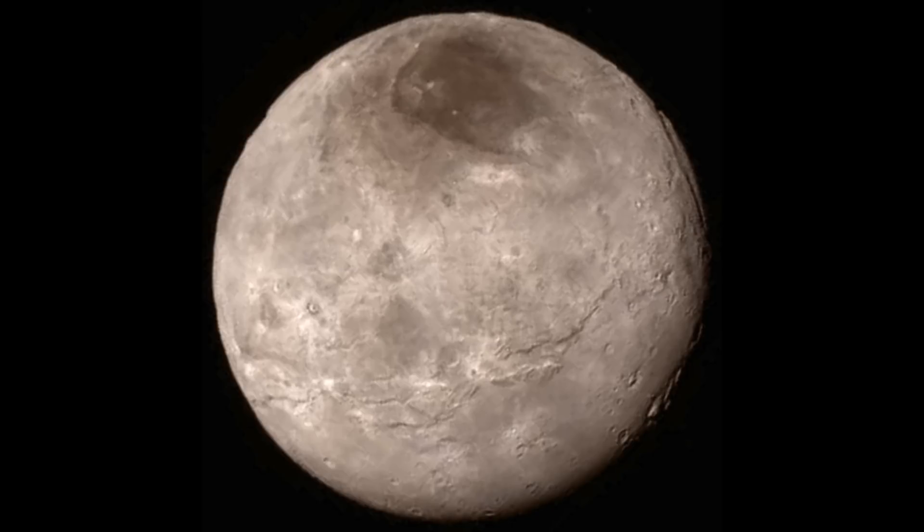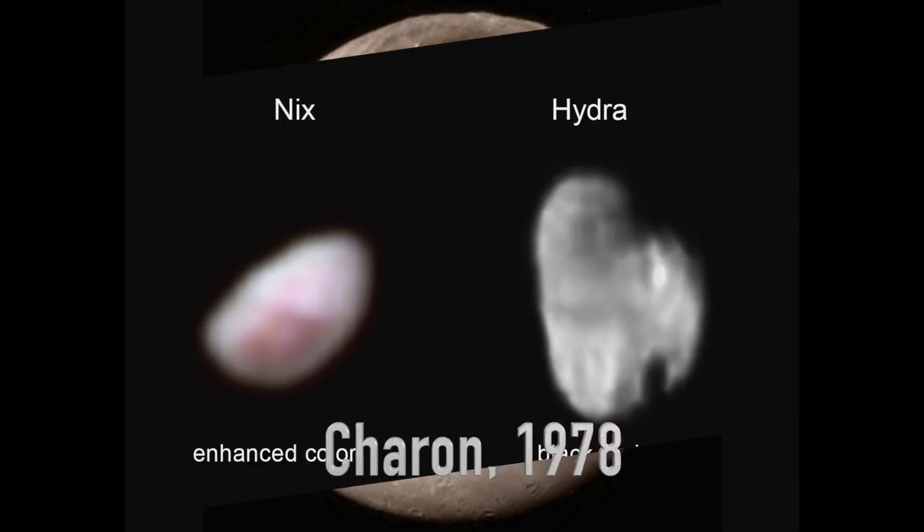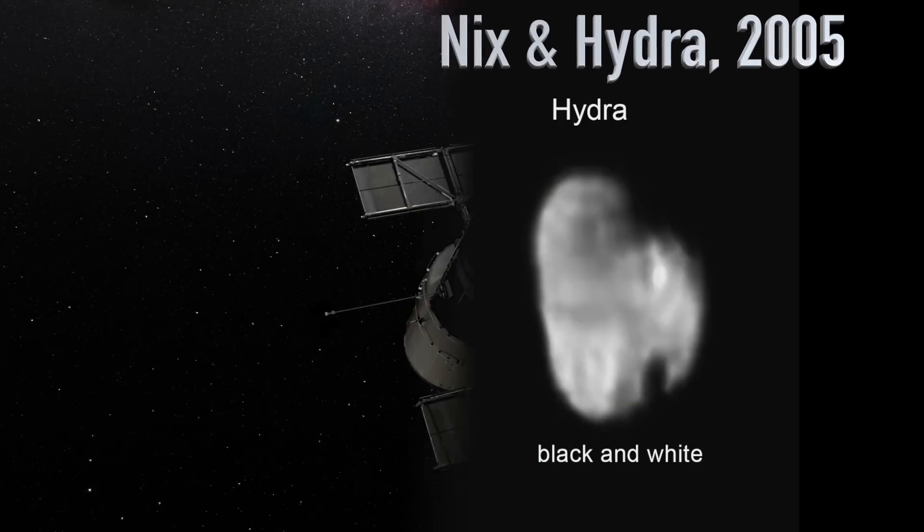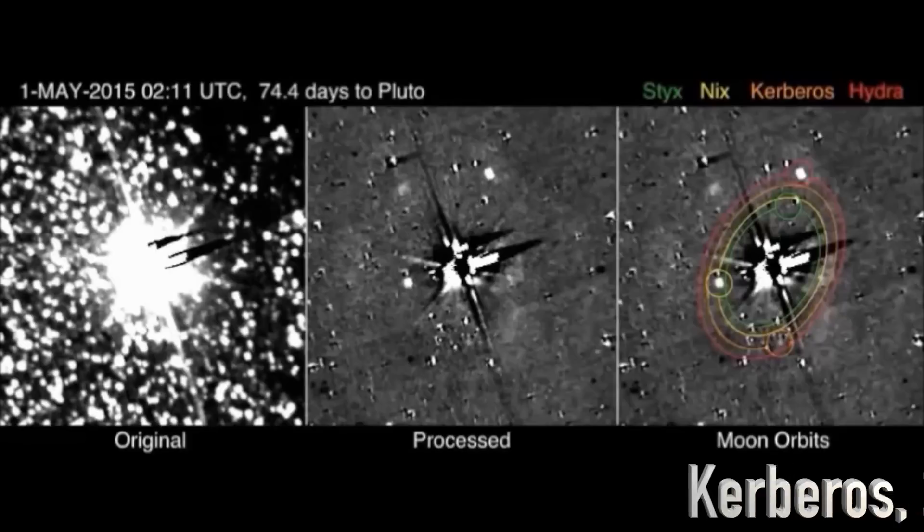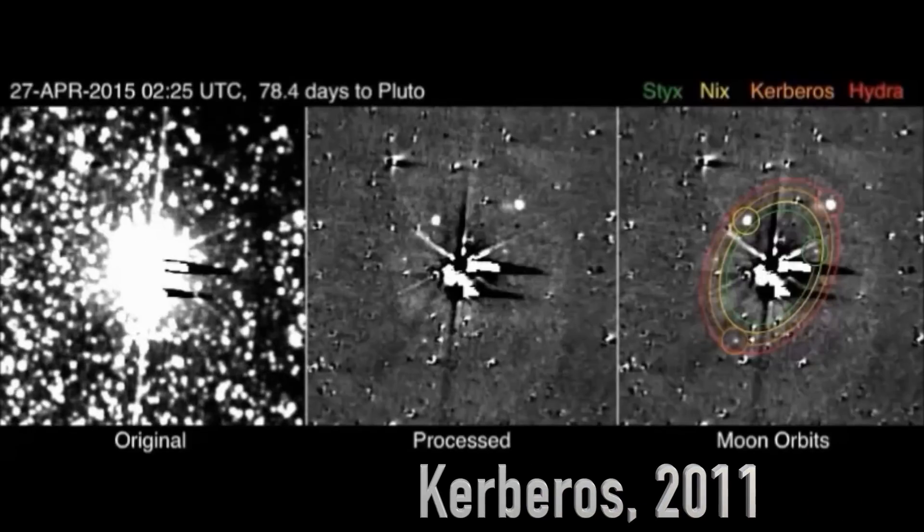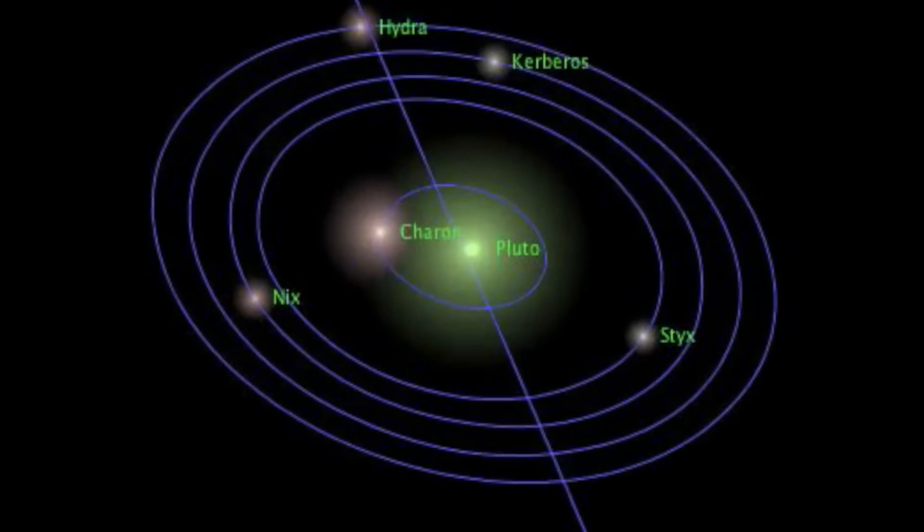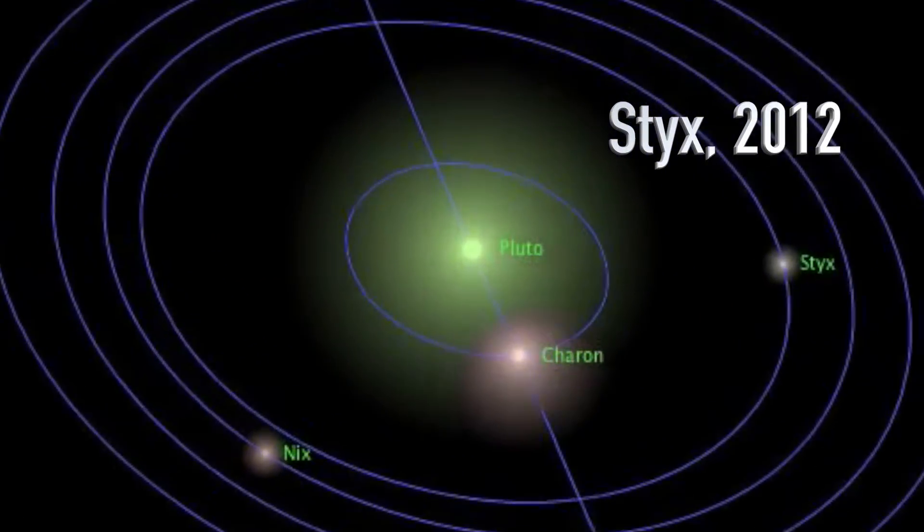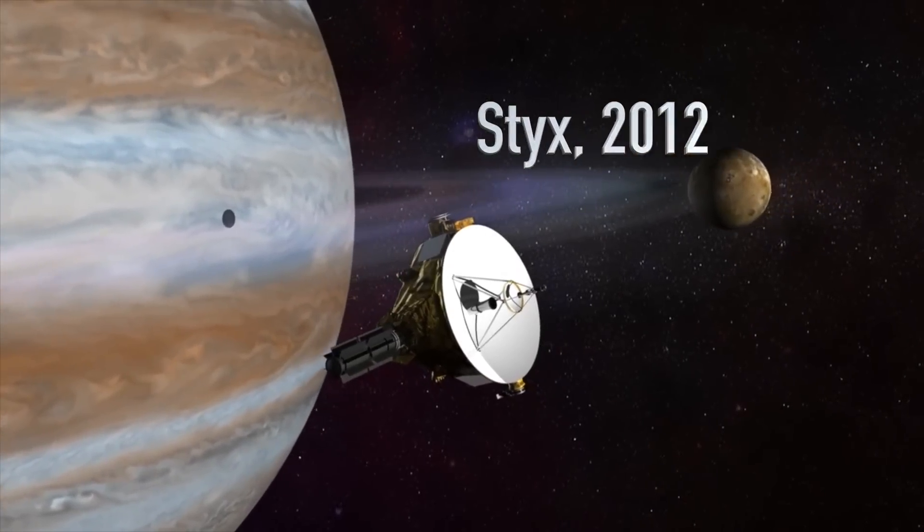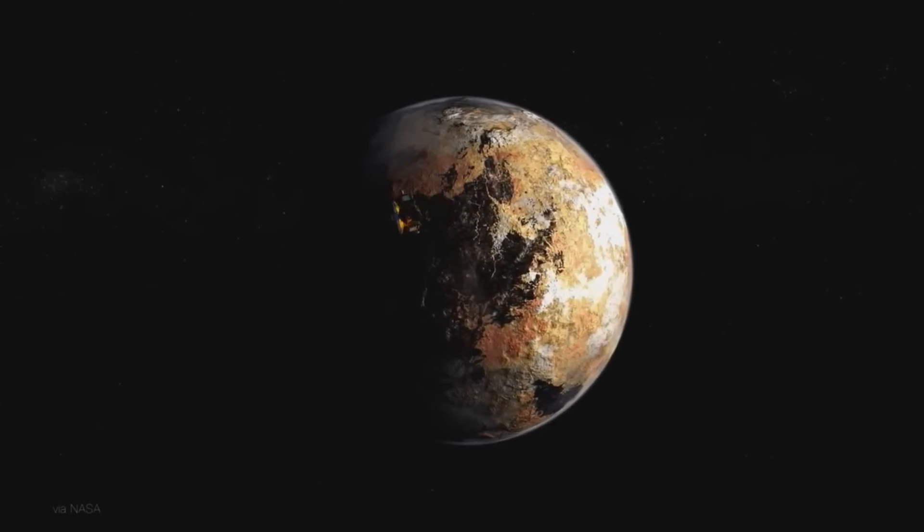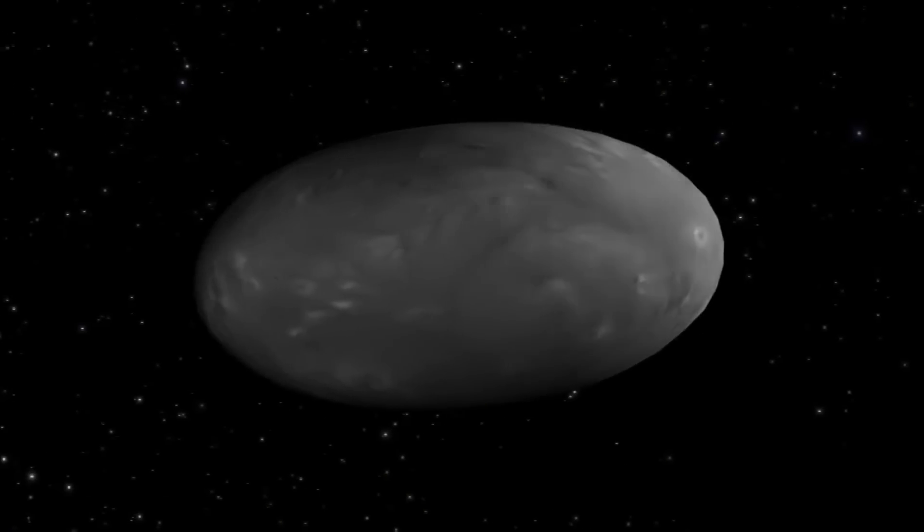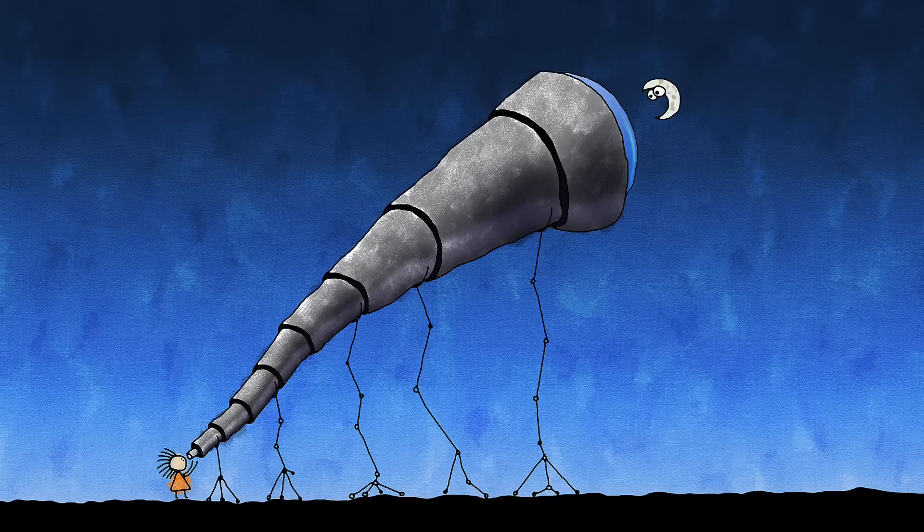In order of discovery, the moons are Charon, Nix and Hydra picked up by the Hubble Space Telescope in 2005, Kerberos, found between the orbits of Nix and Hydra in 2011, and Styx, which was discovered in 2012, when scientists were ensuring there would be no hazards for the 2015 New Horizons spacecraft. To prove the theory of the collision that created these moons, a search for an associated debris field is ongoing.